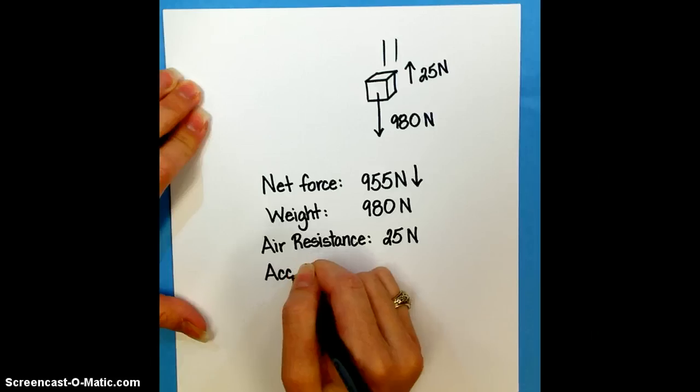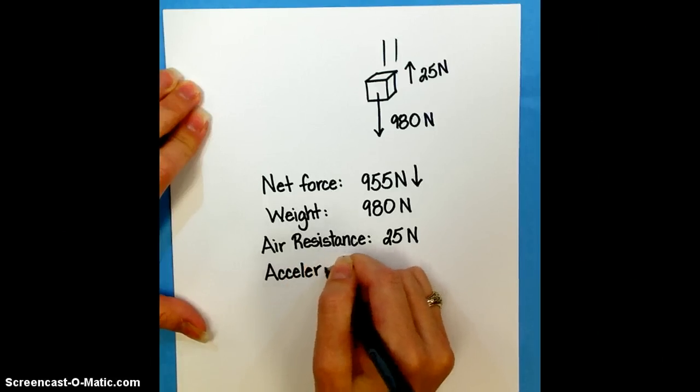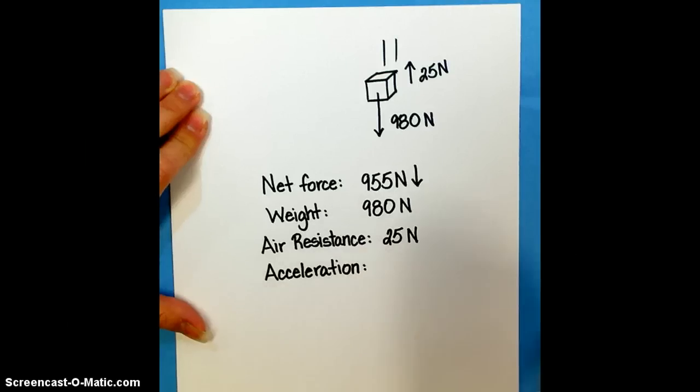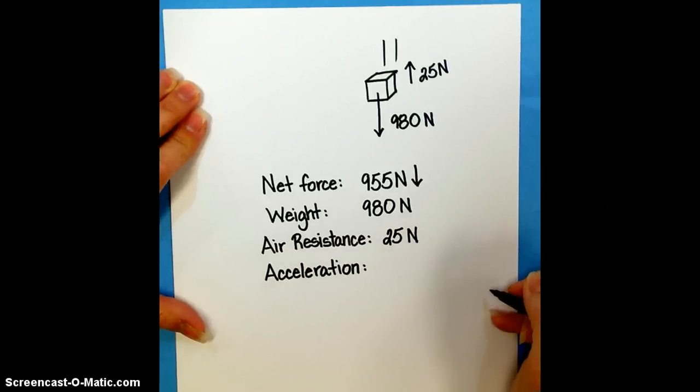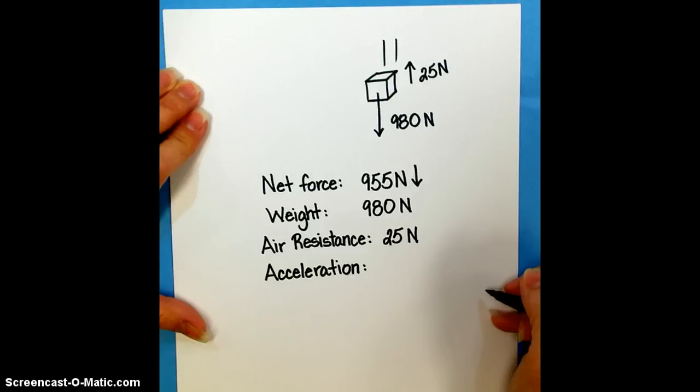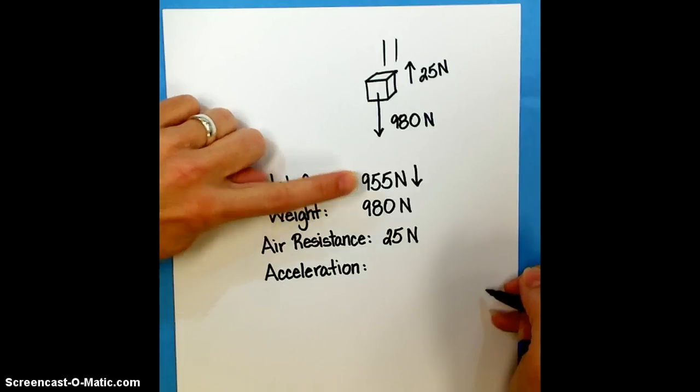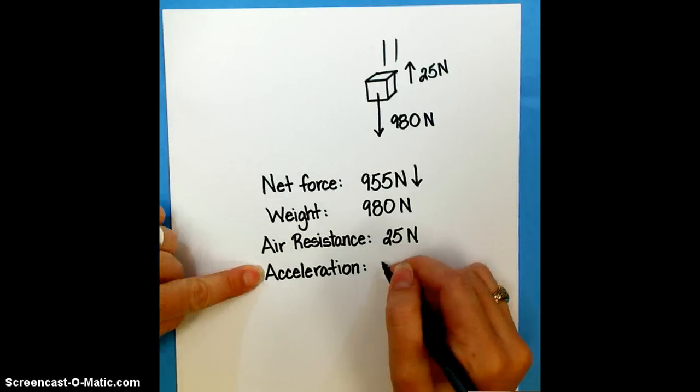Are we able to determine whether the box is accelerating? Well, we know that there's a net force of 955 newtons downward. And we know that acceleration occurs any time that there is a net force that's not zero. So we definitely have a net force. It's 955. So we're definitely going to have acceleration.